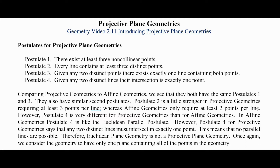In projected plane geometries we have the following postulates. Postulate one: there exists at least three non-collinear points. Postulate two: every line contains at least three distinct points. Postulate three: given any two distinct points, there exists exactly one line containing both points. Postulate four: given any two distinct lines, their intersection is exactly one point.